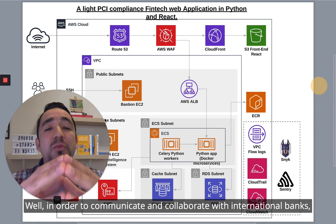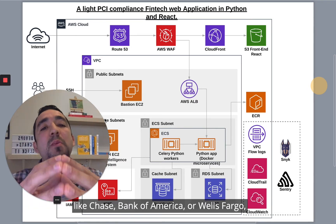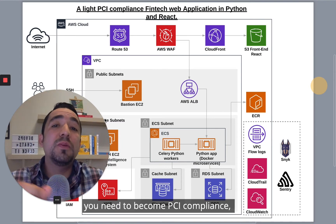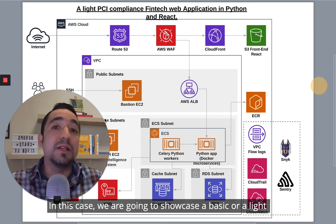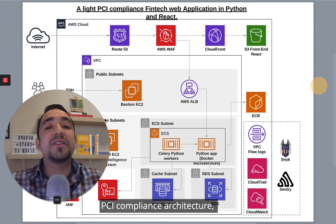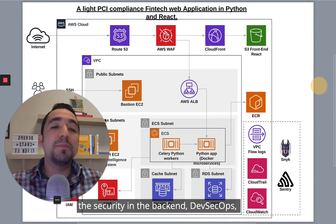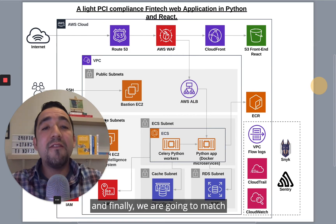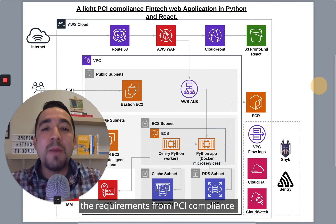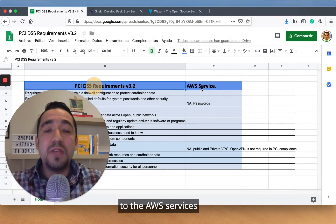Why is it needed? Well, in order to communicate and collaborate with international banks like Chase, Bank of America, or Wells Fargo, you need to become PCI compliant. In this case, we are going to showcase a basic or light PCI compliance architecture, covering security from the front-end, the back-end, DevSecOps, isolated Amazon security tools and technologies, and finally we are going to match the requirements from PCI compliance version 3.2 to the AWS services.